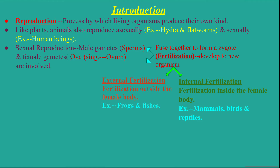Fertilization is of two types: external fertilization and internal fertilization. External fertilization occurs outside the female body — examples are frogs and fishes. Internal fertilization occurs inside the female body — examples are mammals, birds, and reptiles. In the case of human beings, there is internal fertilization.